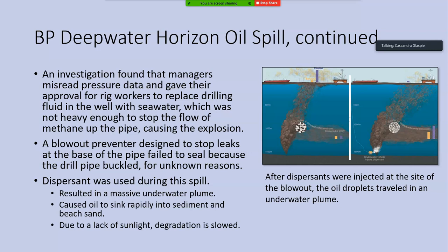Perhaps even more damaging, there are safeguards on these wellheads called blowout preventers, designed to stop leaks at the base of the pipe in case the platform explodes or the pipe is severed. The blowout preventer on the Deepwater Horizon failed to seal because the drill pipe actually buckled when the platform exploded. To this day, we don't know exactly why that happened — the drill pipe is made of some of the strongest materials around, so it may have been severe bad luck.